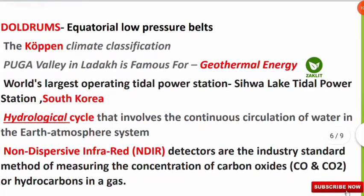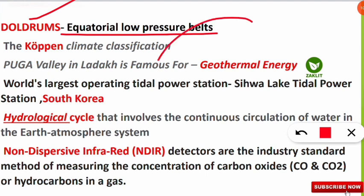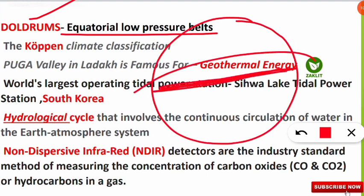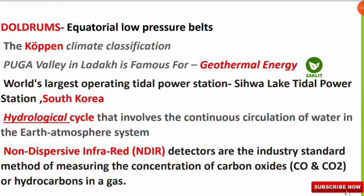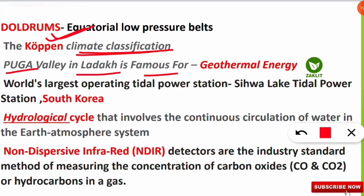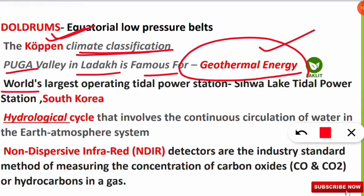Doldrums are the equatorial low-pressure belt — the region around the equator where low pressure builds up. Climate classification is done by Köppen's classification. Puga Valley in Ladakh is famous for geothermal energy due to its hot geysers and springs. The world's largest operating tidal power station is located in South Korea — the Sihwa Lake Tidal Power Station.